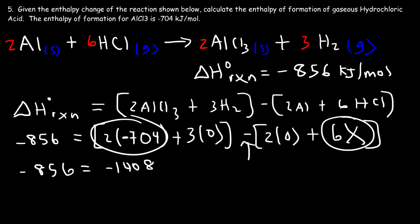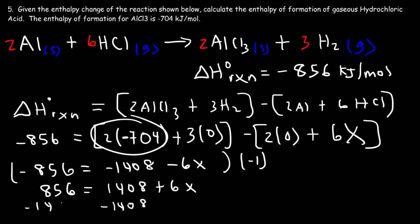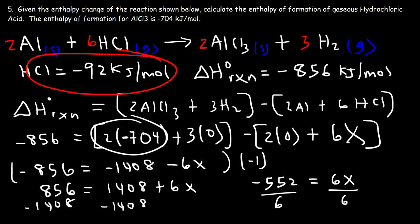We now have negative 6x. Multiplying everything by negative 1, we get positive 856 equals positive 1408 plus 6x. Subtracting 1408 from both sides gives 856 minus 1408, which is negative 552, equal to 6x. Dividing both sides by 6, x equals negative 92 kilojoules per mole. So the heat of formation for HCl is negative 92 kilojoules per mole. That's how you can calculate the heat of formation of a substance within a chemical reaction when given the enthalpy change of the entire reaction.